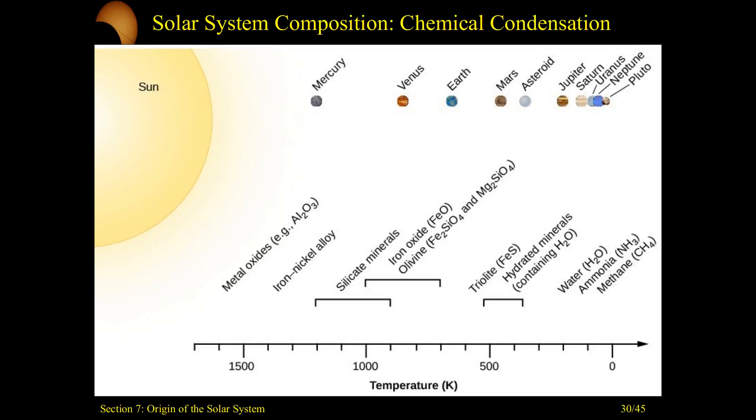And this concept about chemical condensation is to try and explain the range of substances, compounds, that you see throughout the solar system. And so these temperatures here refer to temperatures of the accretion disk before the planets were forming. And what are you going to find there?